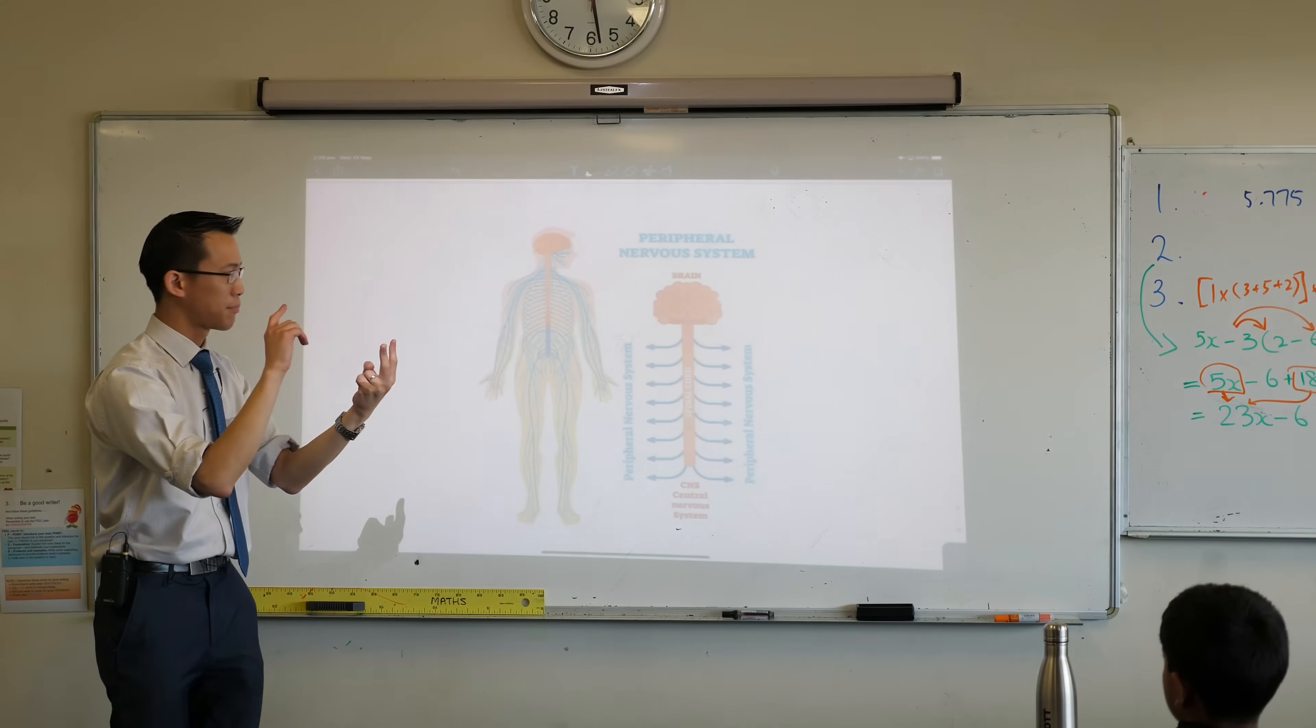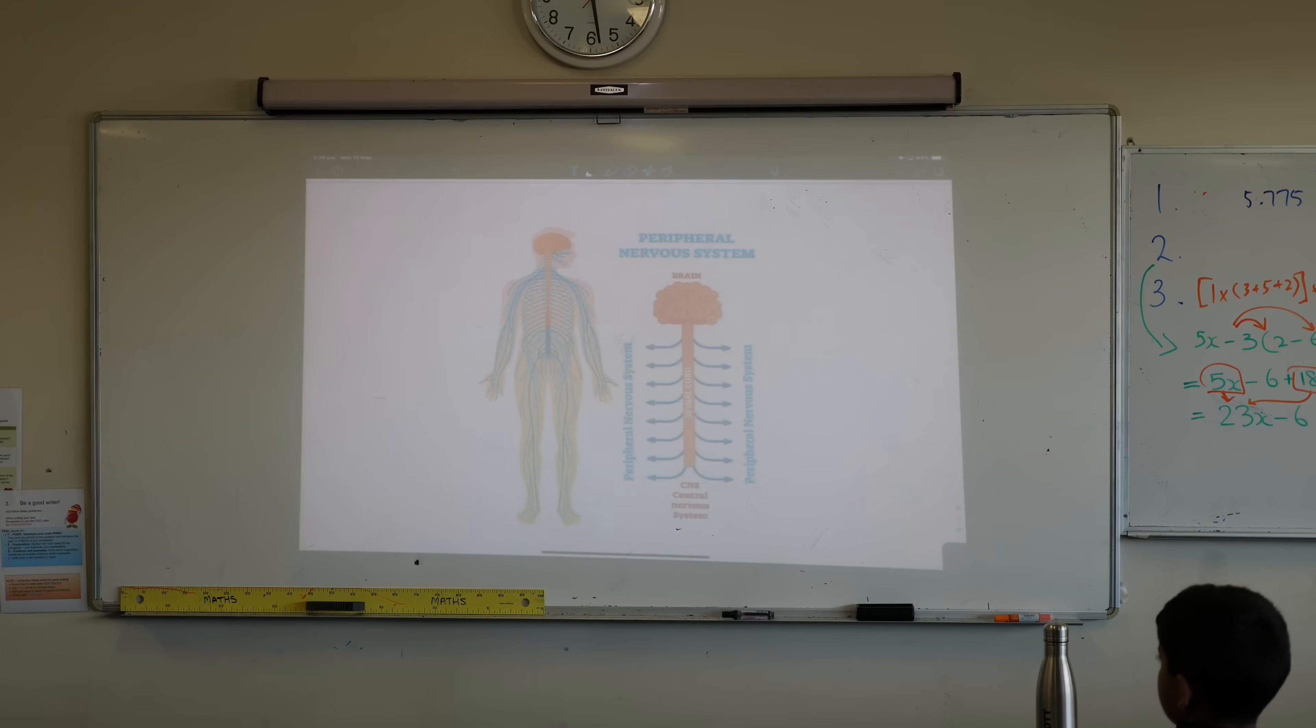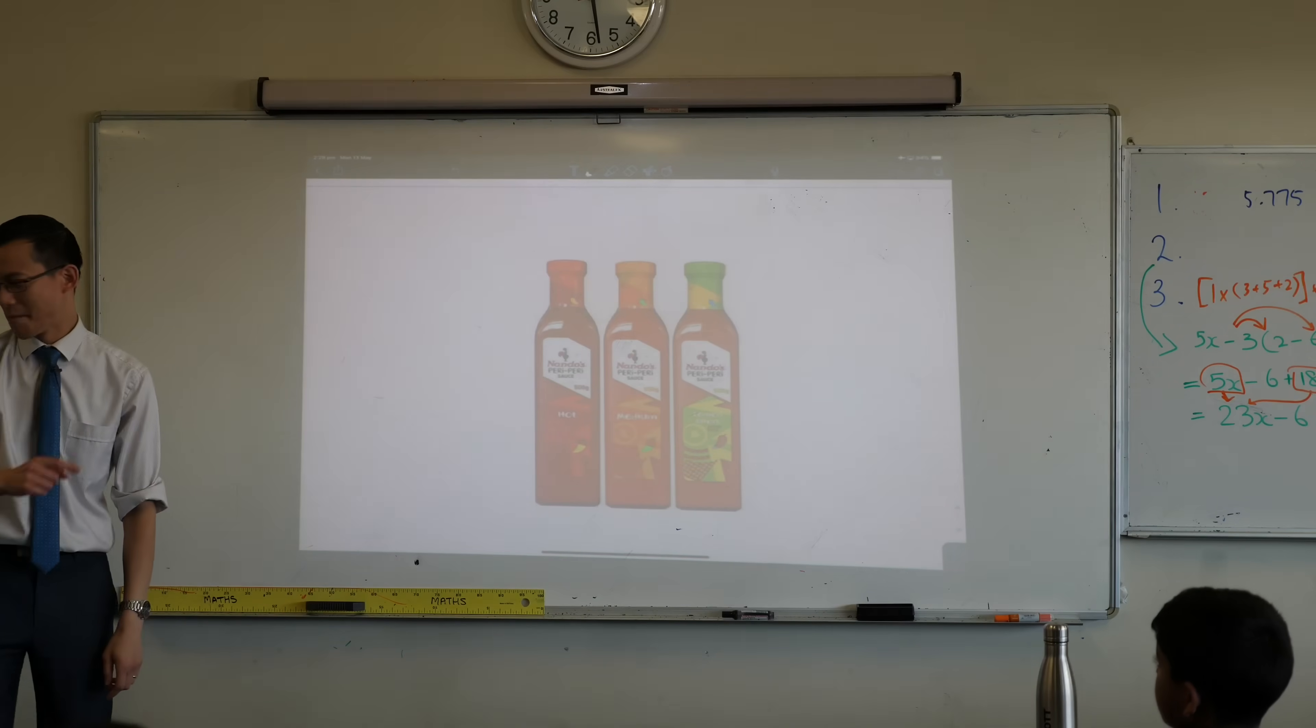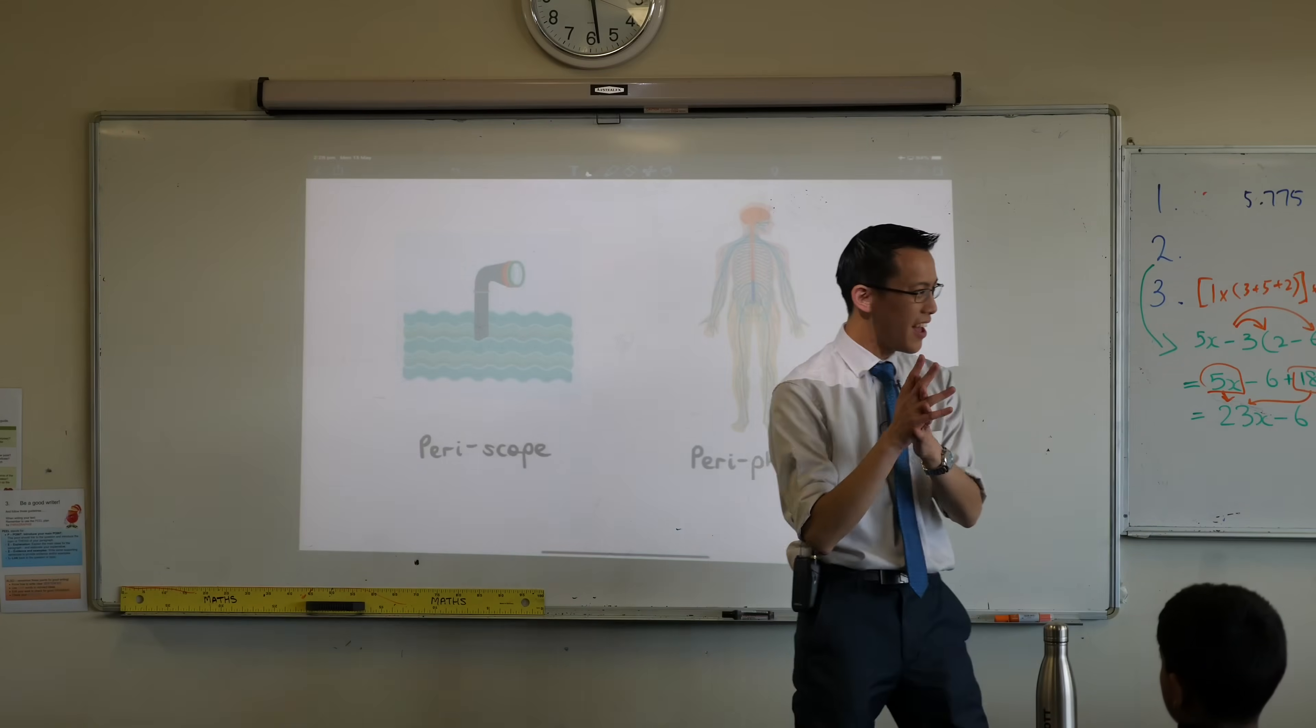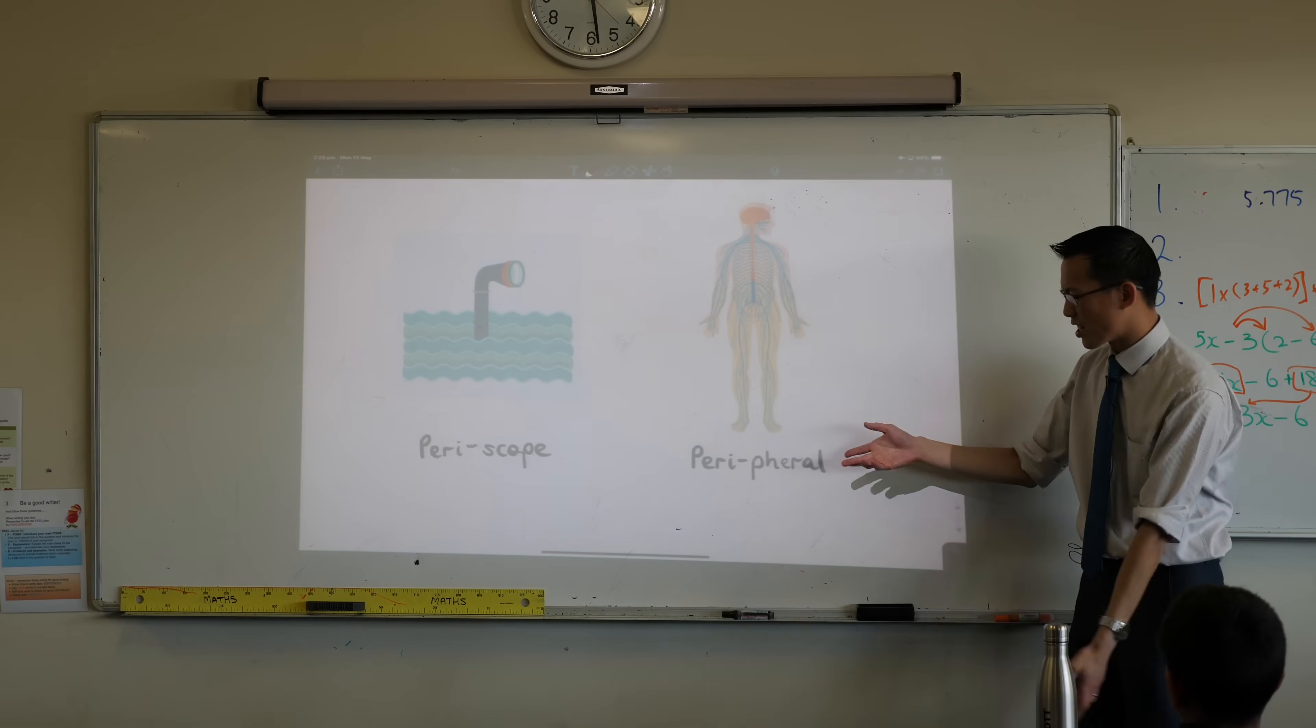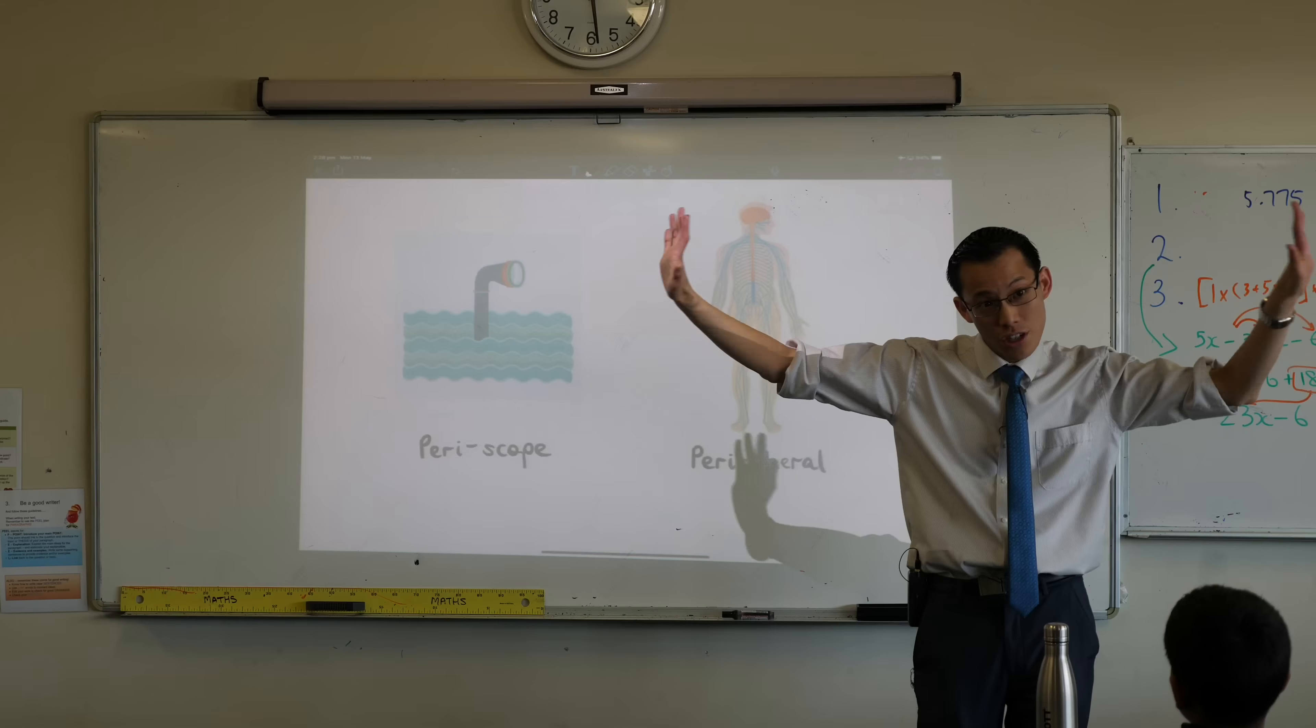So, periscope. Peripheral. Do you know any other words that start with peri? I went and looked this up on Google and I found this, which was not helpful. I was like, that's not what I mean. I want you to think about these two. These are the ones I really mean, right? A periscope sees around things. When something is peripheral, it's around the edges of it. You can even talk about peripheral vision, for instance.